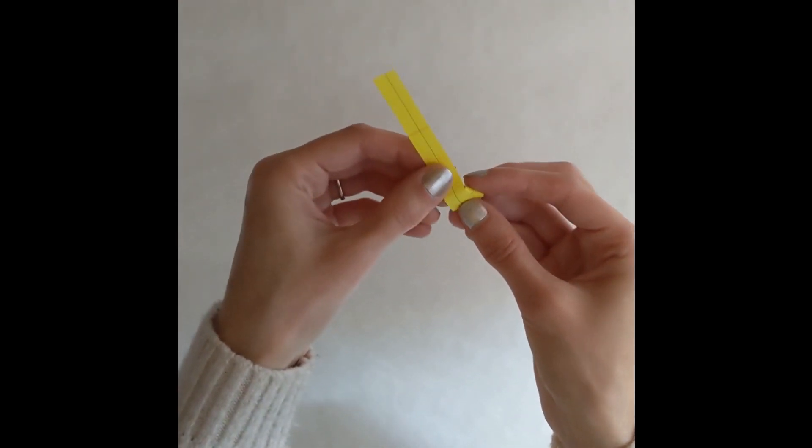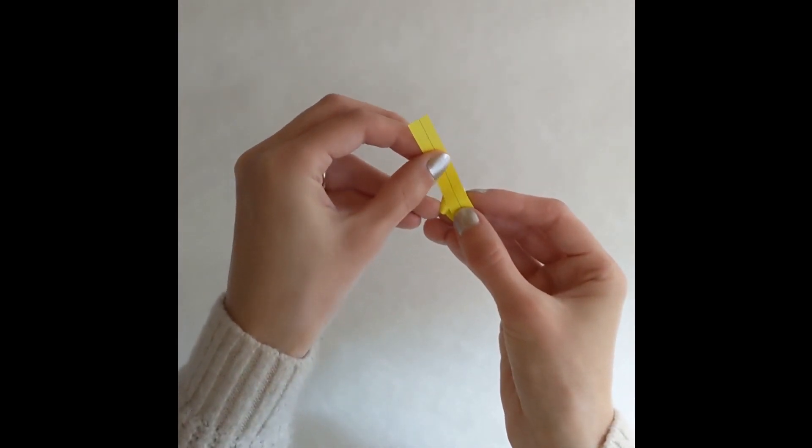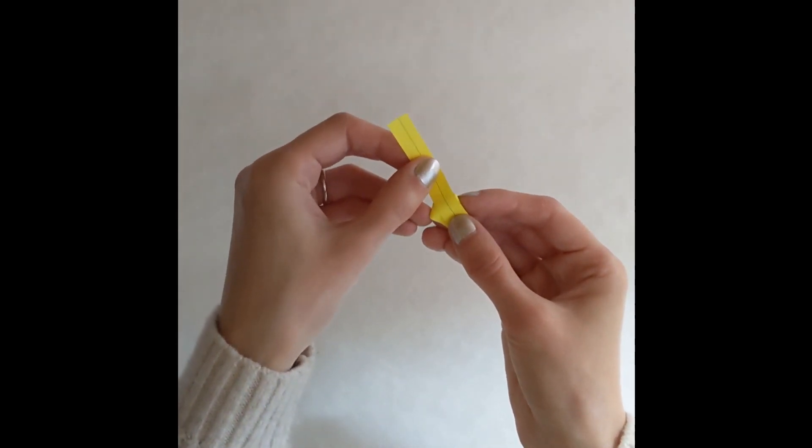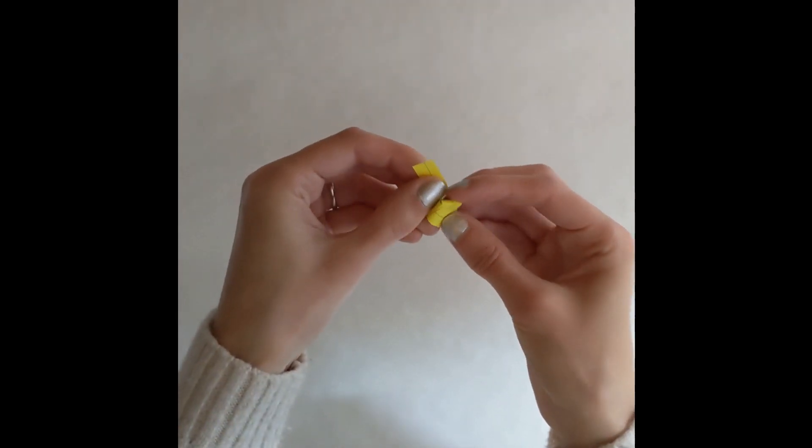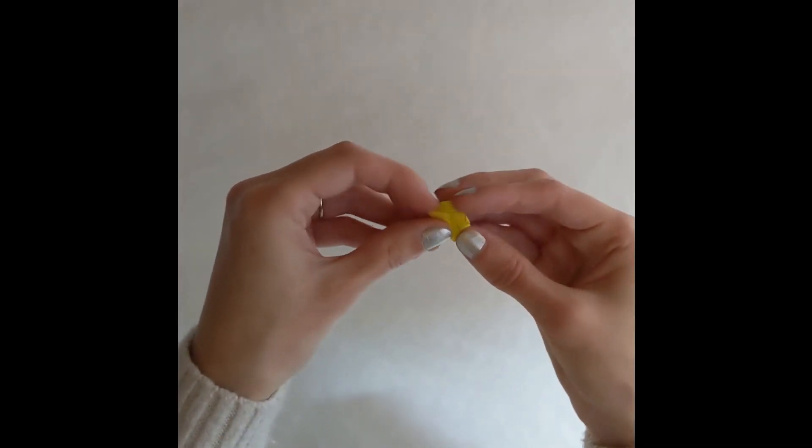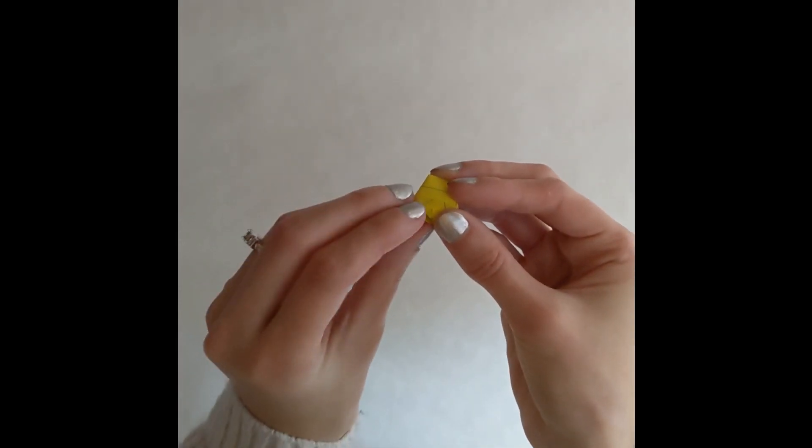And now wrap it nice and snugly without flattening your star. And once you get towards the end, you'll want to just tuck the end of the tail into a pocket in the pentagon. Again, folding it first if necessary to fit.